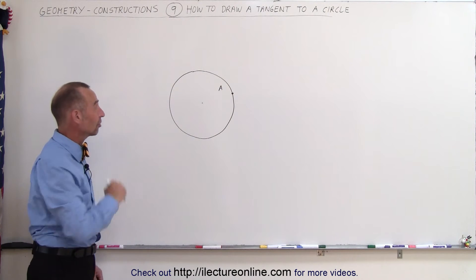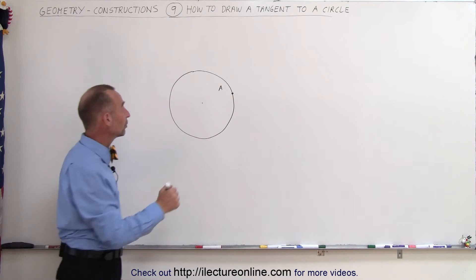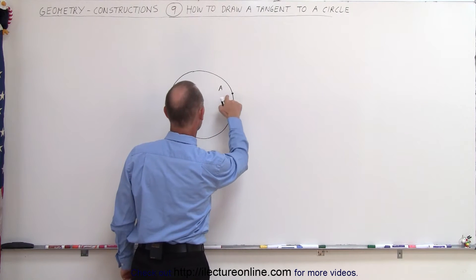So how do we do that? How do we draw a tangent line to the circle? Well, the first thing we do is we draw a line from the center of the circle through point A.